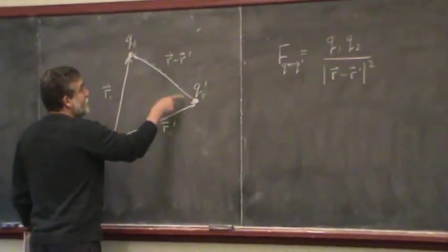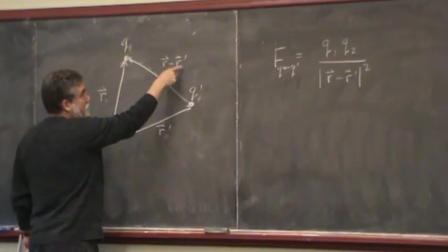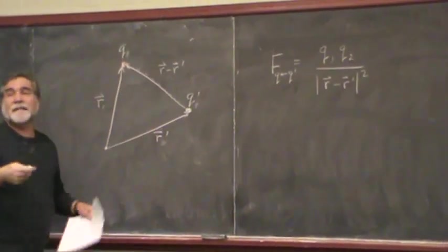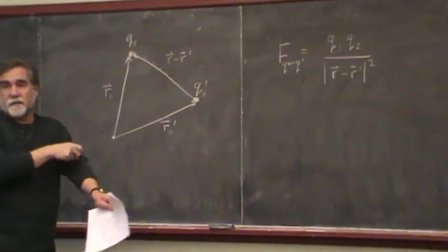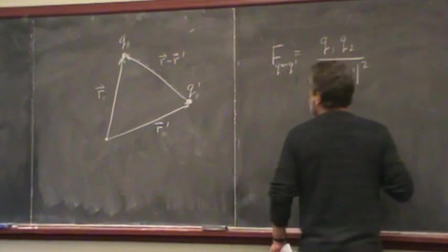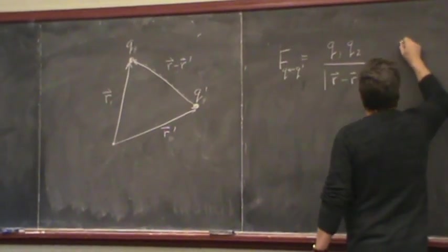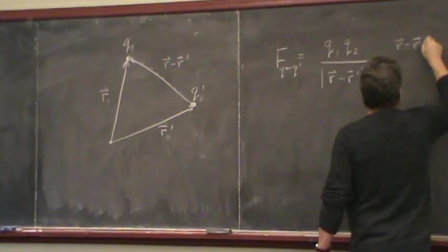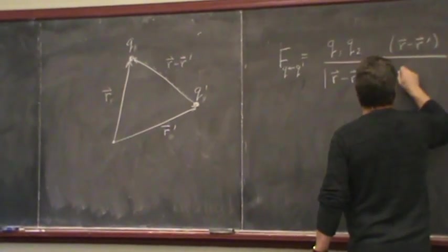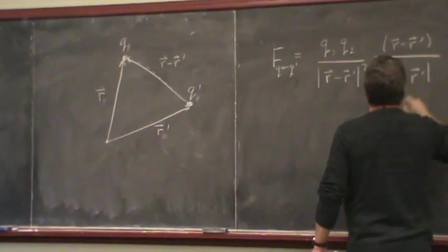I'm going to define a vector that goes from r prime to r — from q prime to q — and that's how I'm going to define the direction of the forces acting here. I just want a unit vector, so the unit vector is going to be r minus r prime divided by the magnitude of r minus r prime.